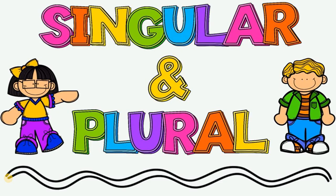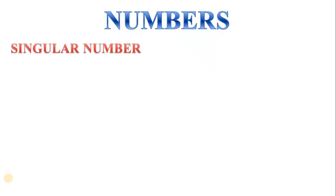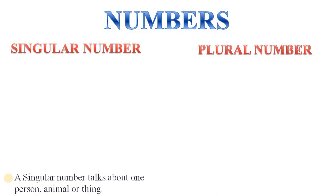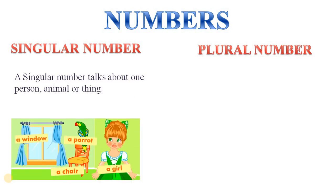Do you know what is singular and plural? In noun, there are two numbers: singular number and plural number. A singular number talks about one person, animal or thing. Like, here in this picture, everything is only one — one window, a parrot, a chair and a gun. All of them are only one in number, so they all are singular.